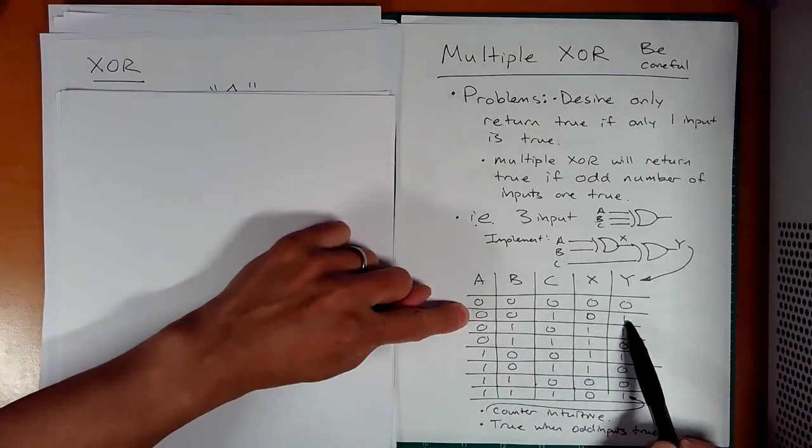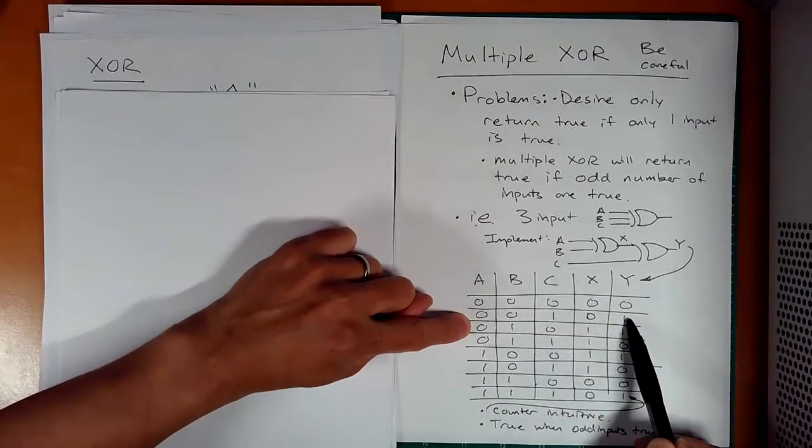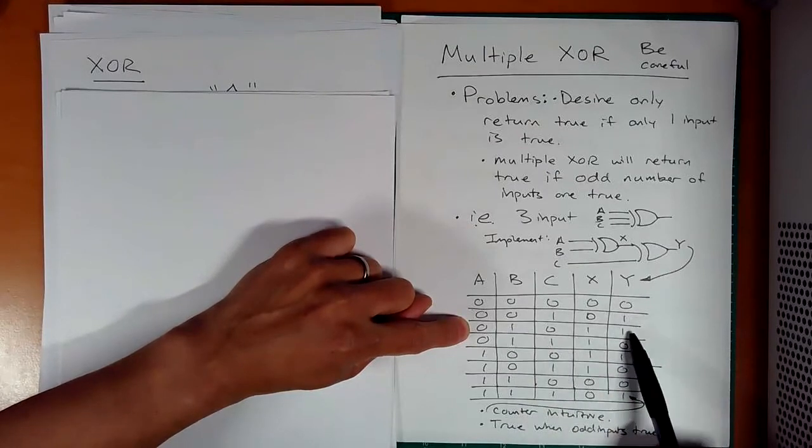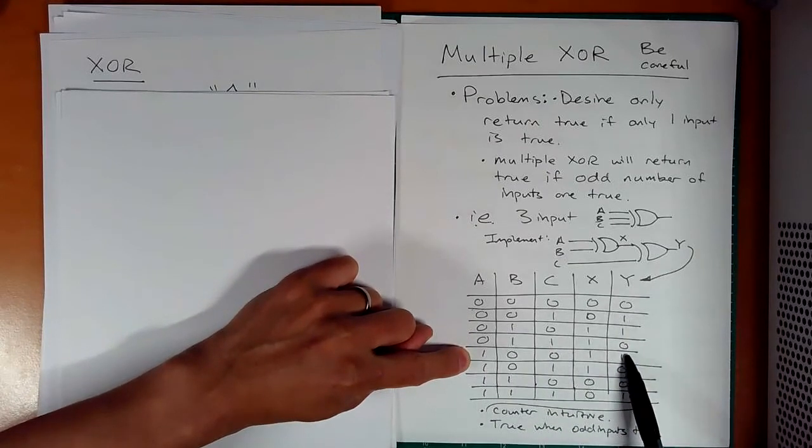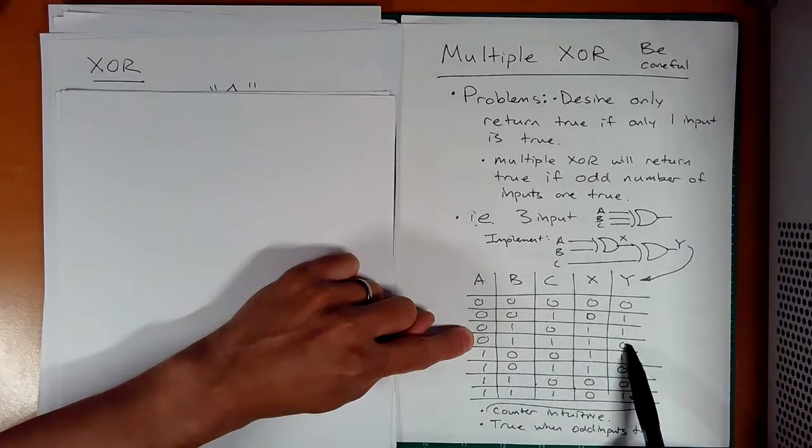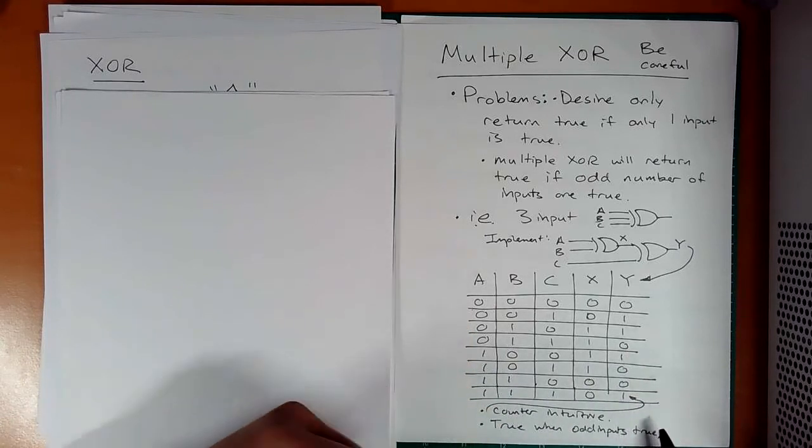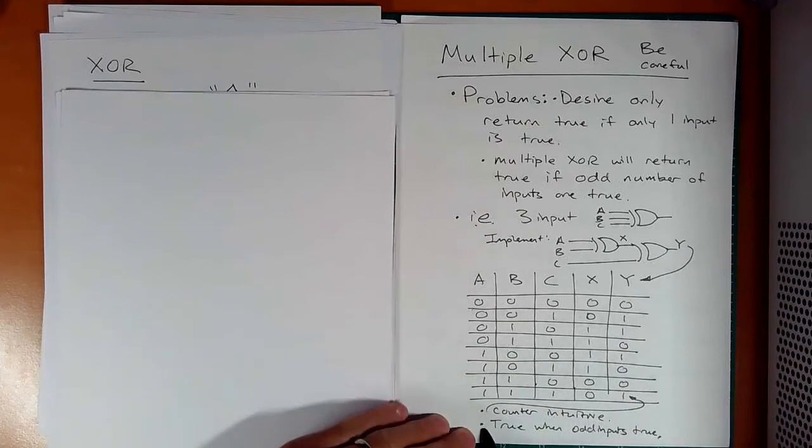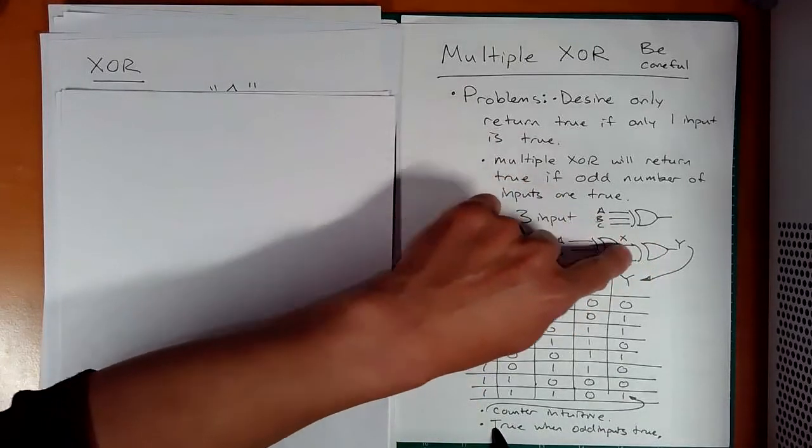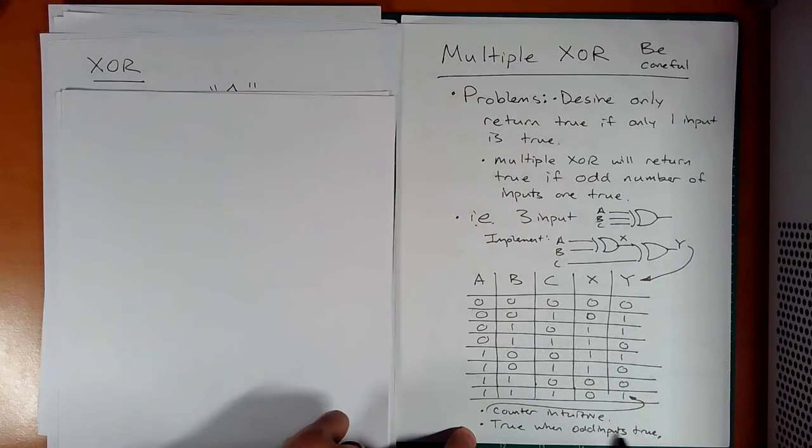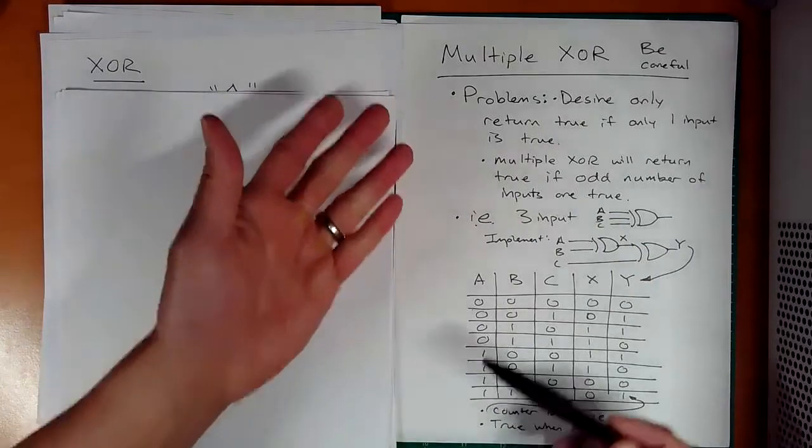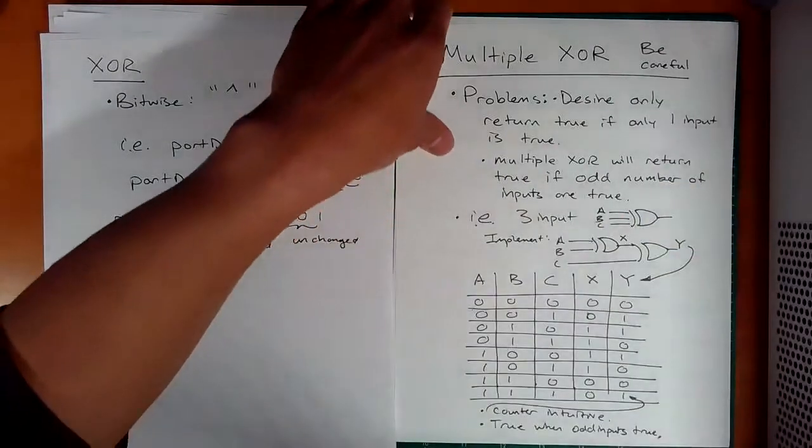If I look at a, b, and c, look at this. Only 1 was true when the output is true. Only 1 is true, the output is true. Only 1 is true, the output is true. Notice here, 2 are true, 0. But here, all of them are true and you get a 1. This confirms the fact that multiple exclusive ORs cascaded like this will give you true when the odd inputs are true. Just be careful when you're dealing with multiple exclusive ORs.